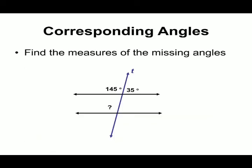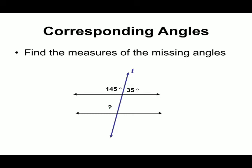Find the measurement of the missing angle. One angle is given as 145°. This angle and the missing angle are corresponding angles, so their measurements are equal — the missing angle is also 145°.